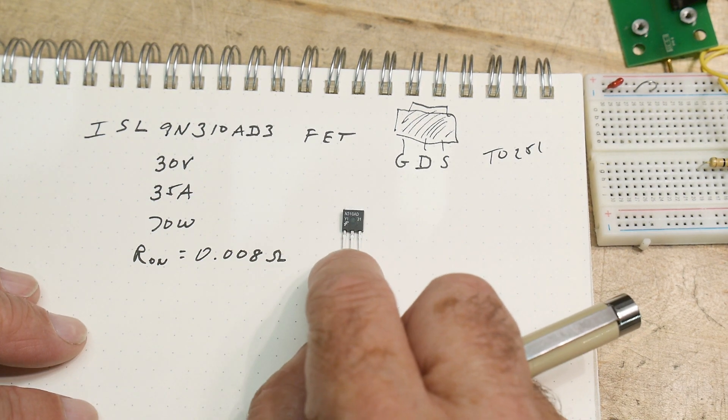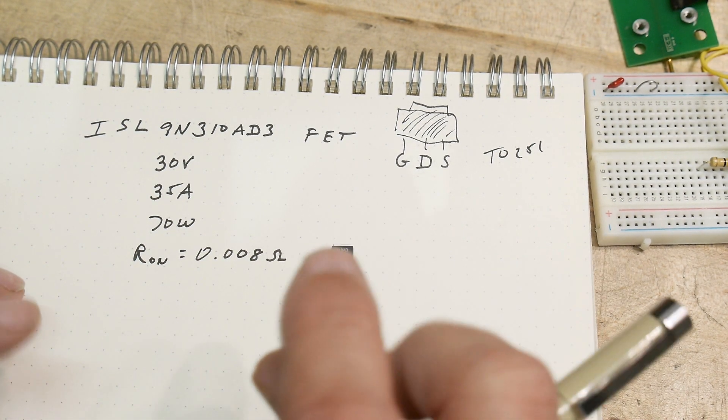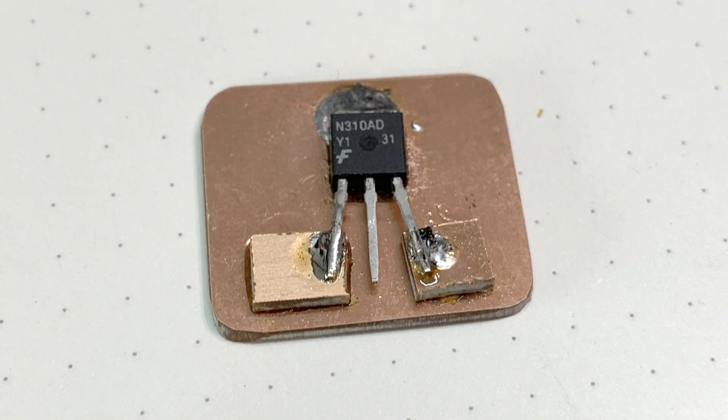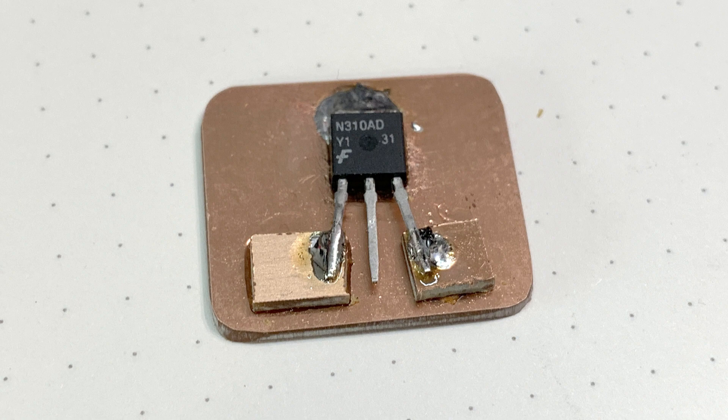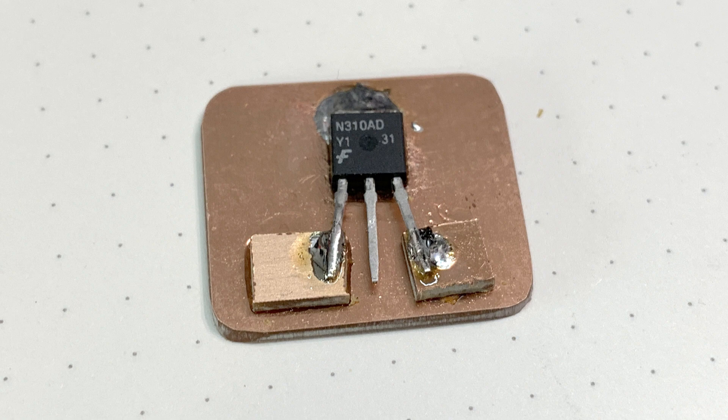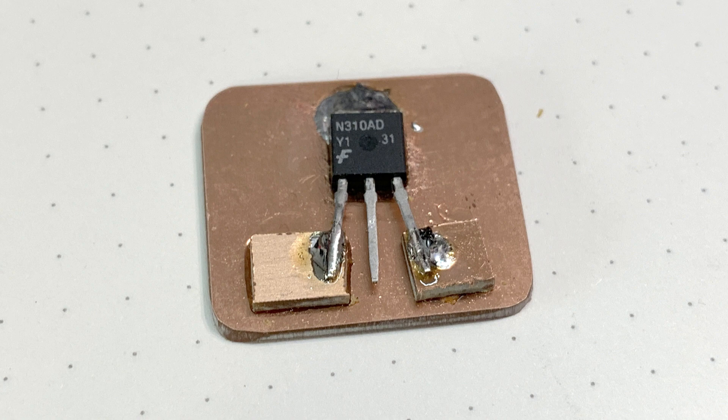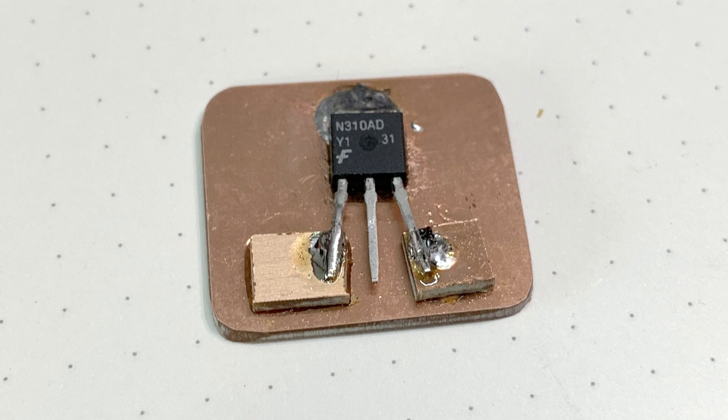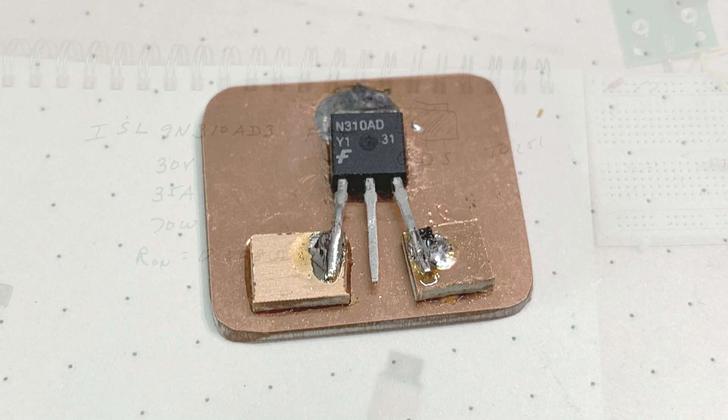So let's go ahead and see how I'm going to put this on a board. I'll put a picture here. It's a copper clad board. The part is soldered onto the copper. And then there's two isolation pads for the gate and for the source. The drain is the same as the tab. And so the gate and source need to be isolated from the big piece of copper.